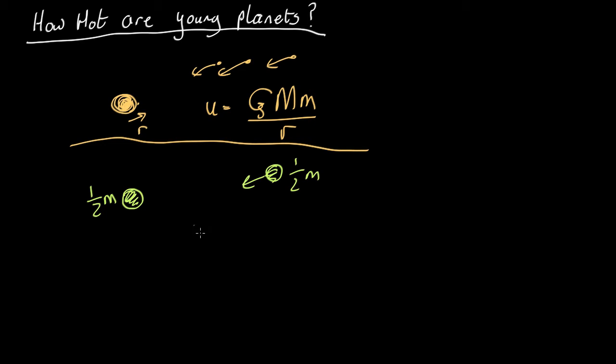So what is that energy? Well, the potential energy is going to be gravitational constant times the mass of the lump in the middle, which is half the final mass, times the infalling mass, another half the final mass, all over...